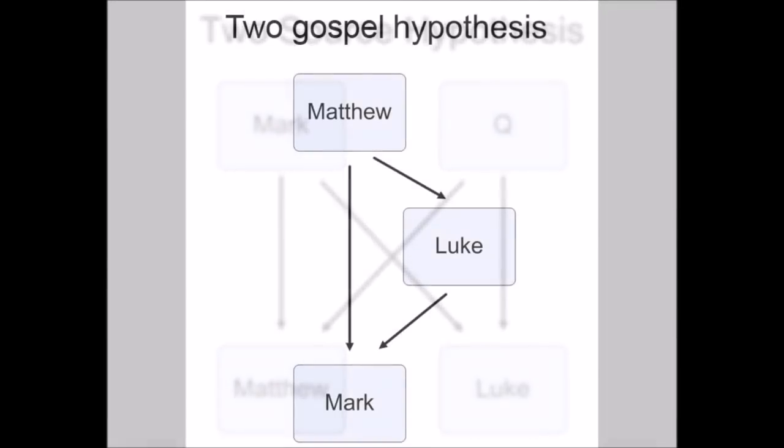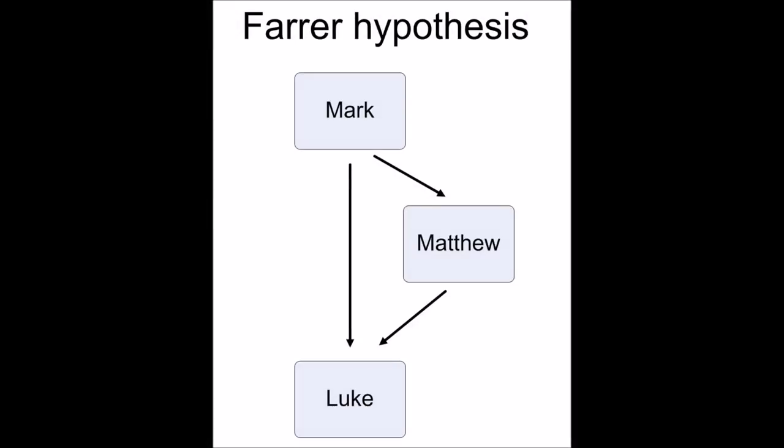The two-gospels hypothesis, as opposed to the two-source hypothesis, holds that Matthew was written first, then Luke used Matthew, and Mark was written third, using both Luke and Matthew. The Farrar hypothesis holds that Mark was written first, followed by Matthew who used Mark, and then Luke who used both Matthew and Mark. The oral tradition hypothesis is the fourth one, and it holds that much of the commonality between the Gospels is based on them using the same oral traditions, rather than relying on each other or external written sources.